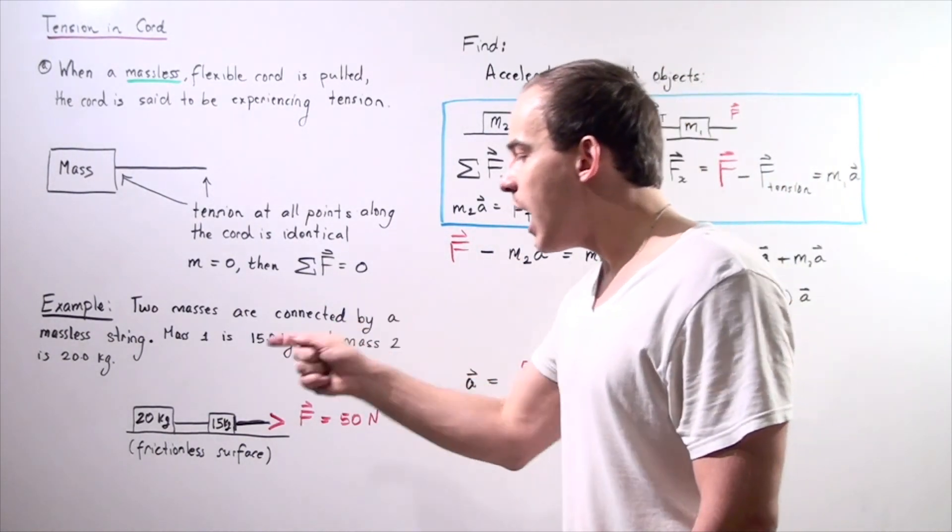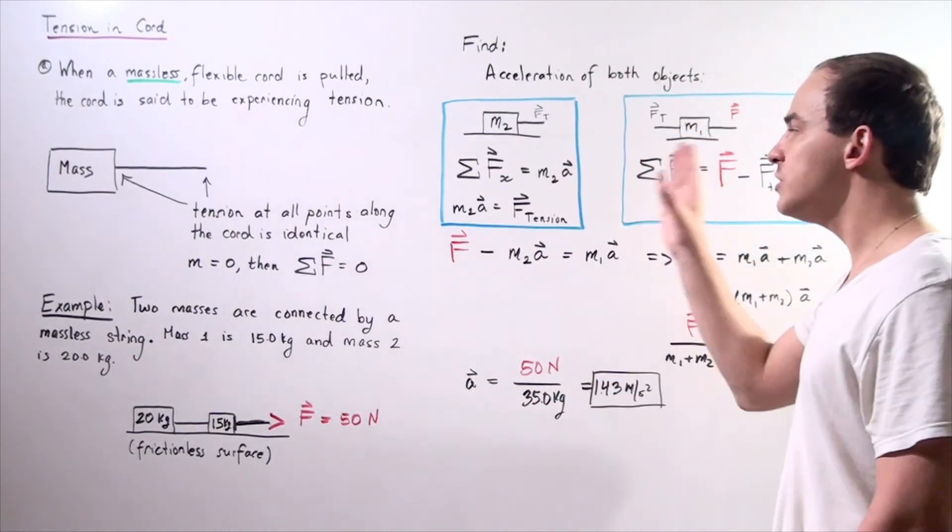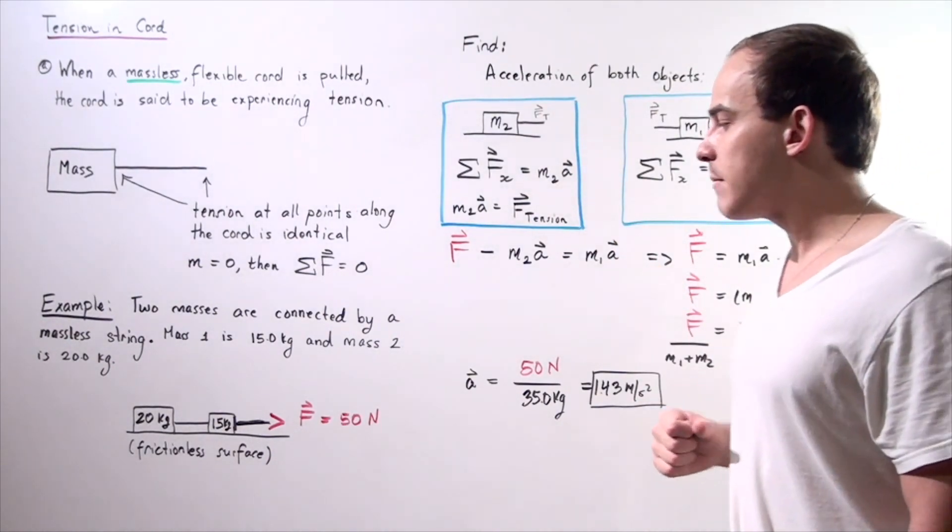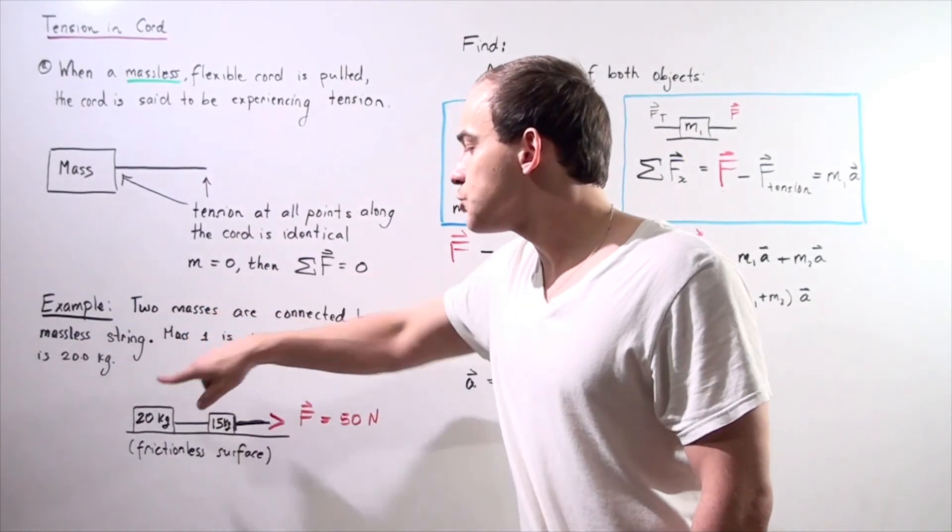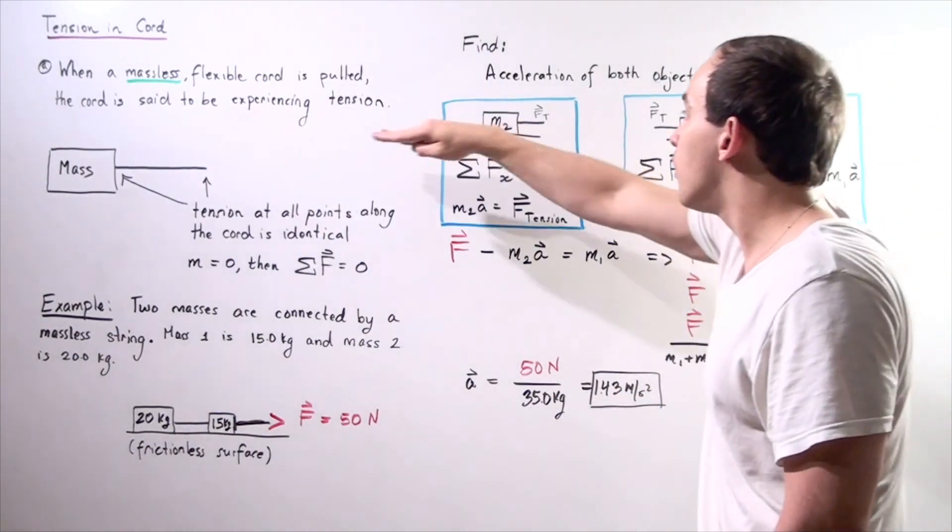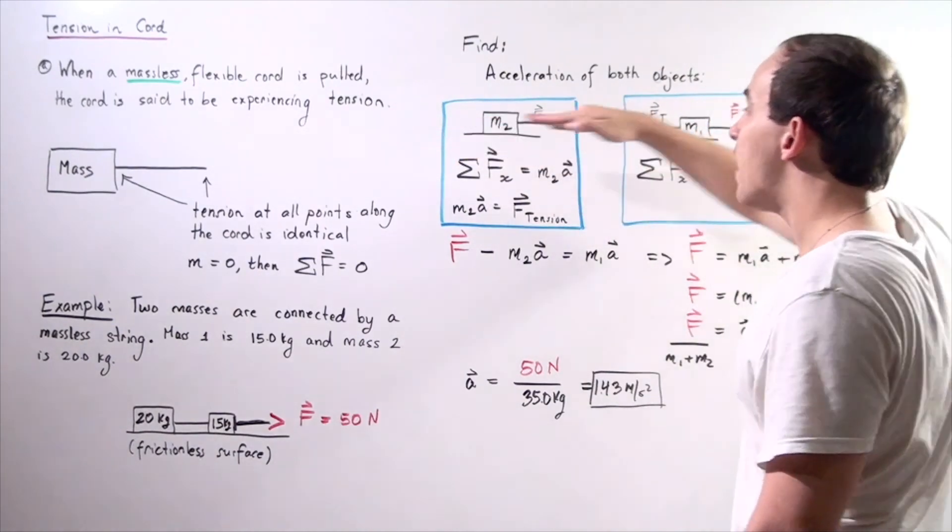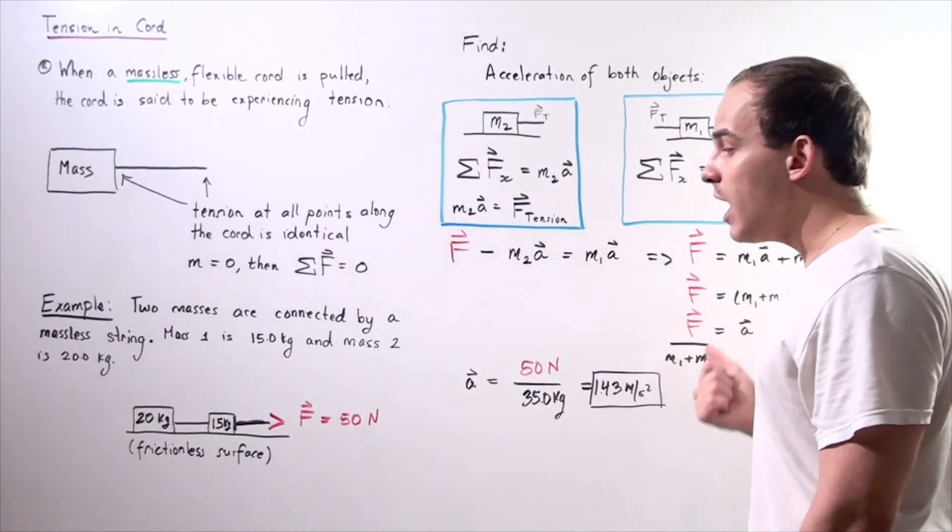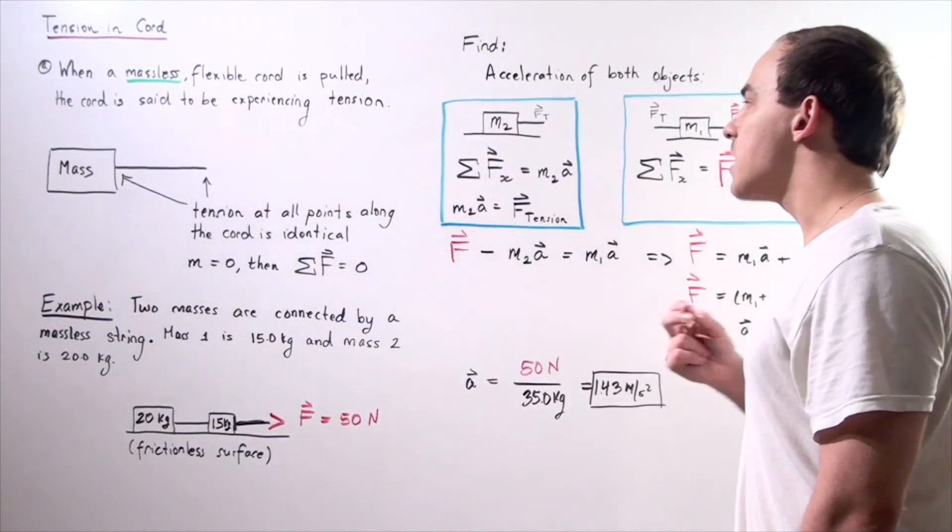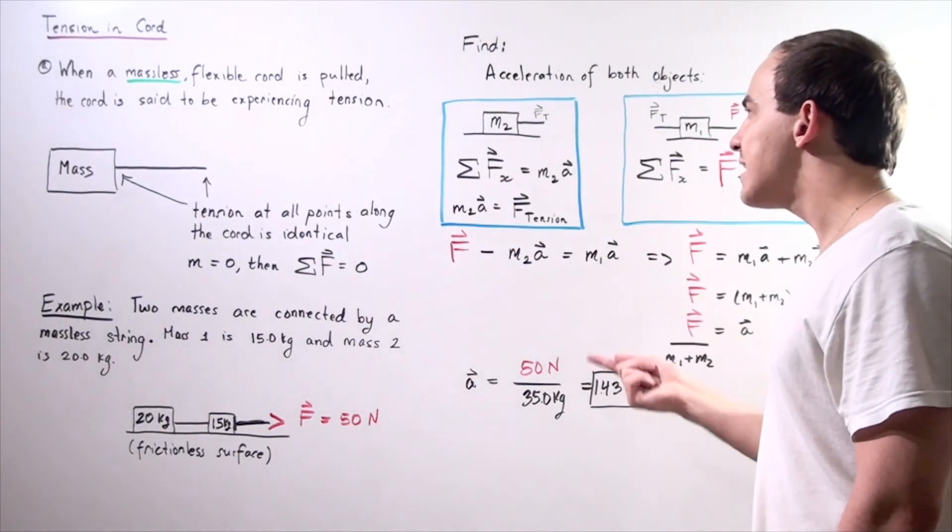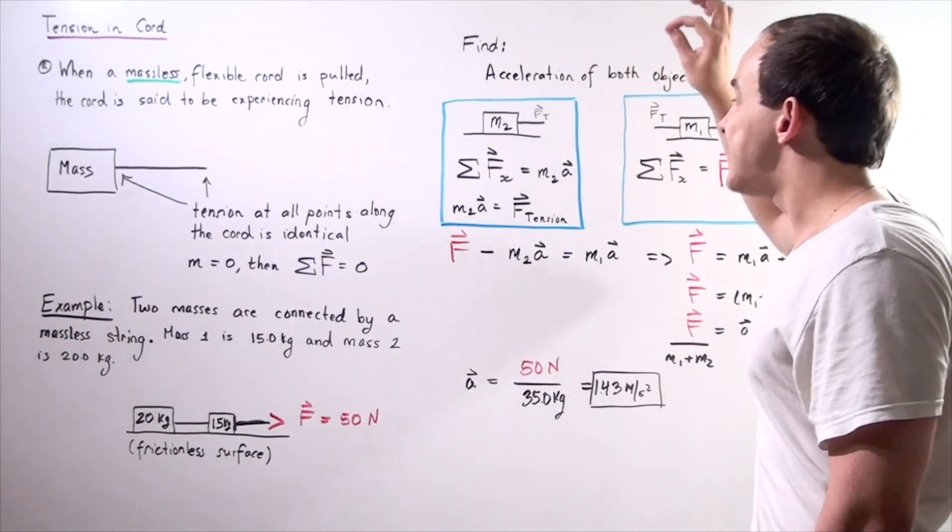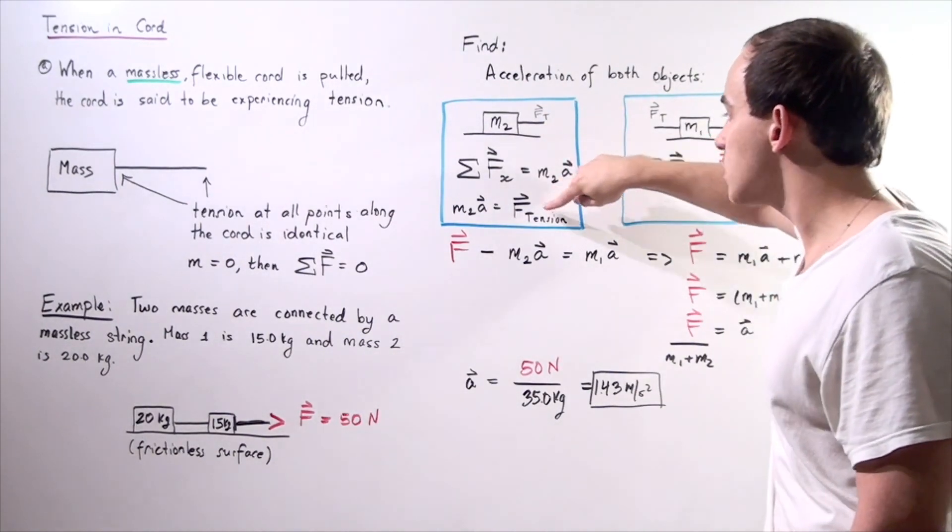Because we have two objects, we should have two different free body diagrams. Let's begin with the force body diagram of object number two, mass two. We only have one force that's pulling the mass in this direction along the positive direction along our x-axis, because we're dealing with a frictionless surface. The sum of all the forces along the x-axis is equal to mass of this object multiplied by acceleration. Let's say that the tension in this cord is given by force tension.